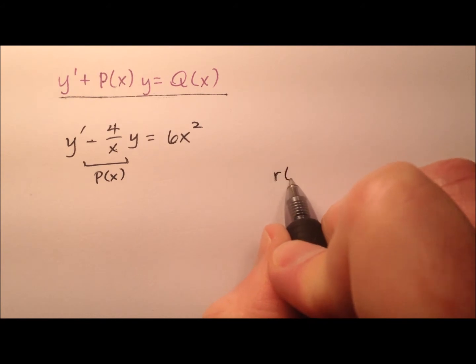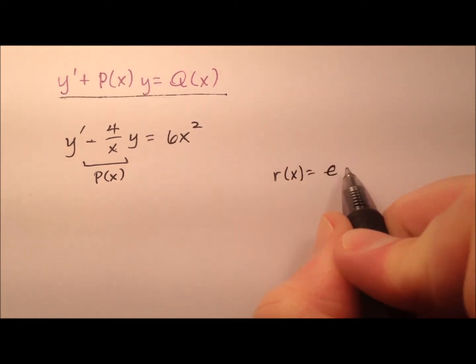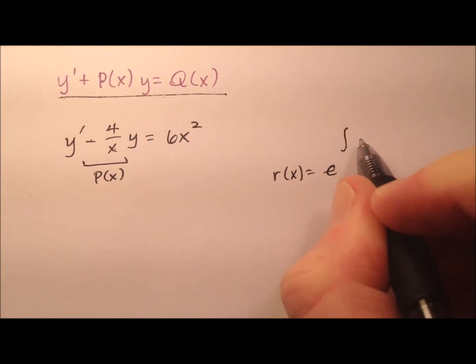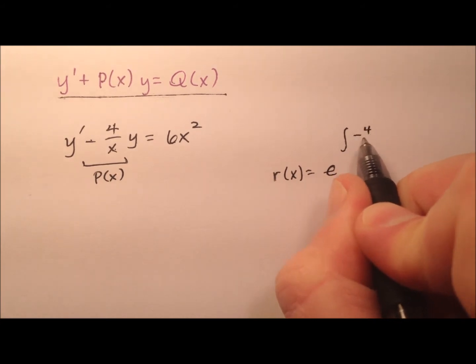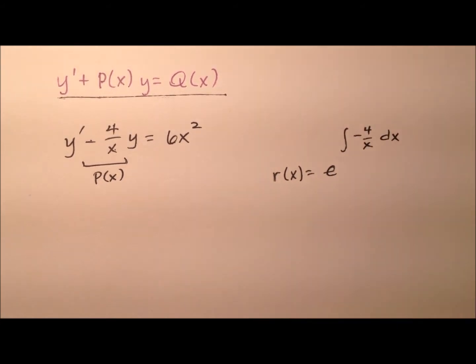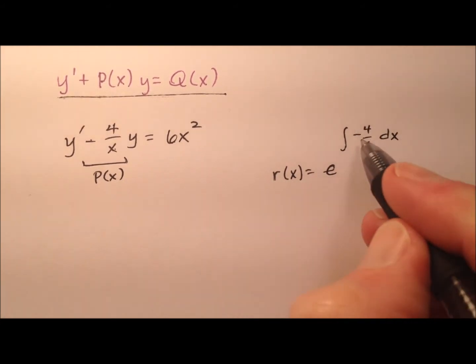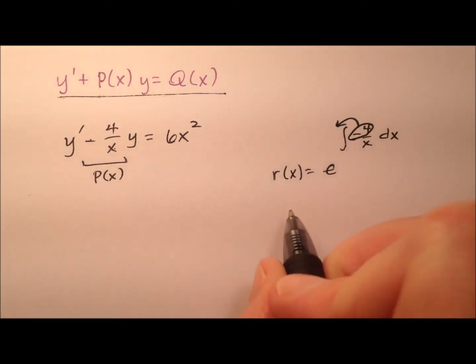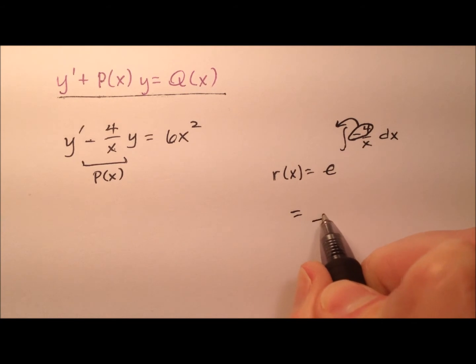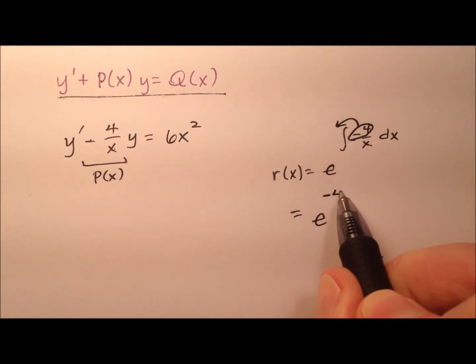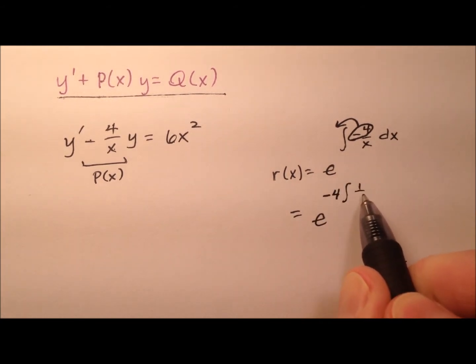So I'm going to call my integrating factor r of x, and it's e to the power of the integral of my p of x, which is negative 4 over x with respect to x. The negative 4 on top, I'm going to go ahead and bring out front as a constant. So I can say it's e to the power of negative 4 times the integral of 1 over x with respect to x.